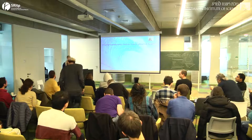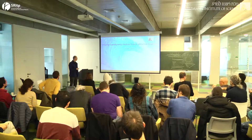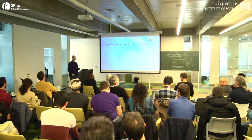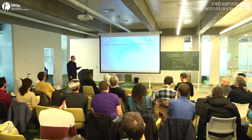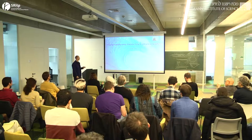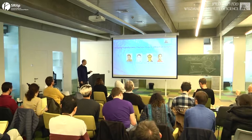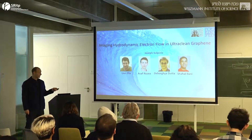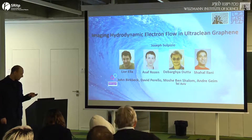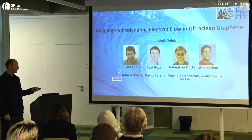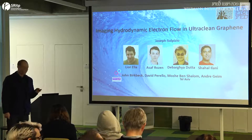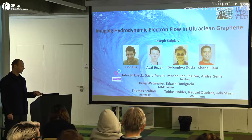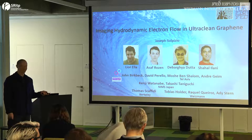Last time we talked about the technique we use to image flow profiles, and today I'll talk about the actual hydrodynamic electron flow experiments in graphene. This is experimental work done with Liorella, Asaf Rosen, Dibar Goduda, and Shachal Alani, with graphene devices made by John, David, Moshe, and Andre Geim, and then Fury from Thomas Gafiti from Berkeley, and Tobias, Raquel, and Adi from here at Weizmann.